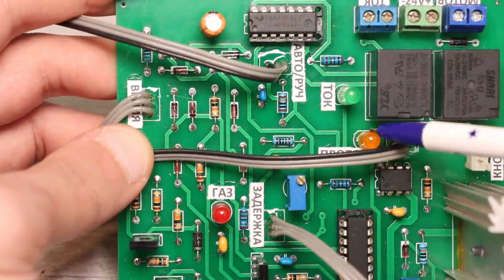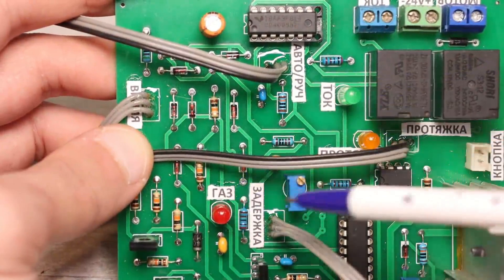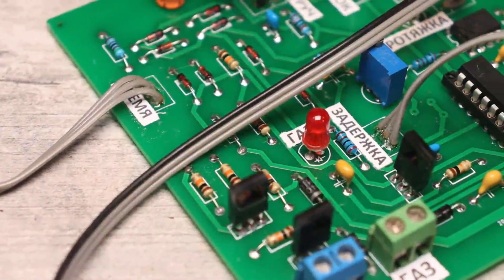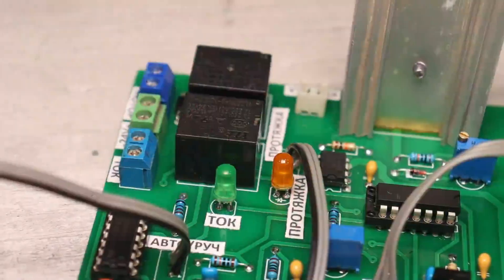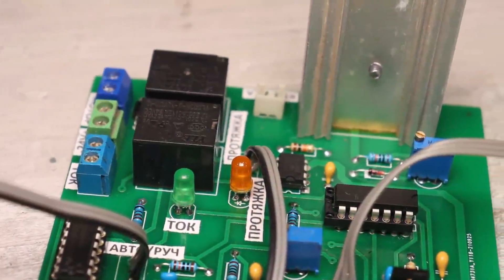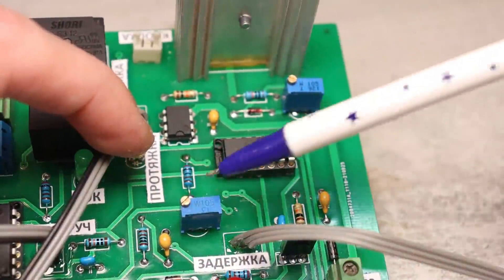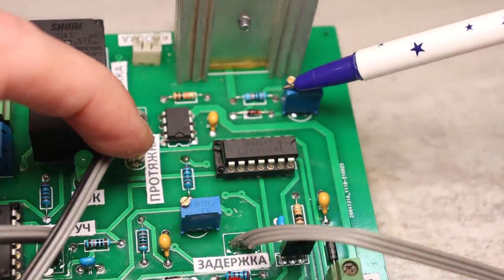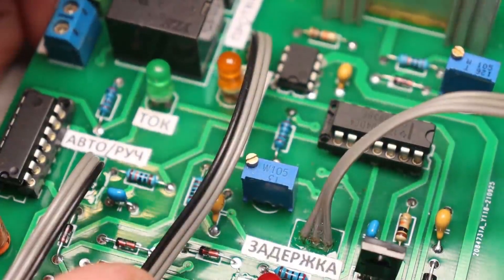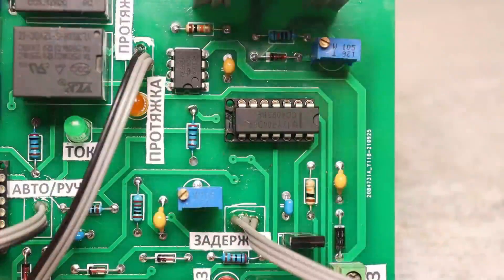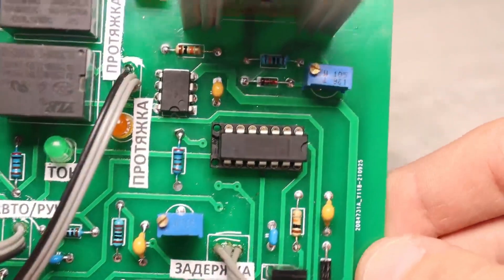There are LEDs on the board that visualize the operation of the main components. They can be brought out to the front panel of the semi-automatic machine or left on the board, but it's better to duplicate them. The adjustable resistors for setting the purge time don't need to be brought out to the front panel, I think. You set everything up once, according to your needs and that's it.